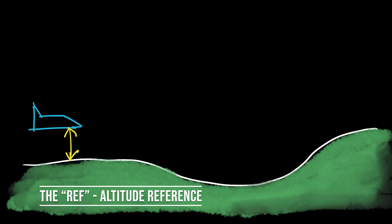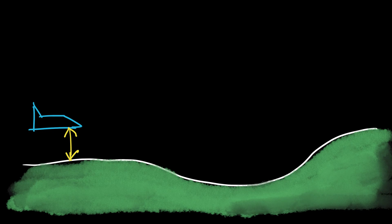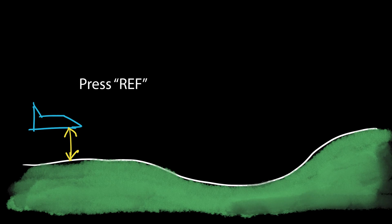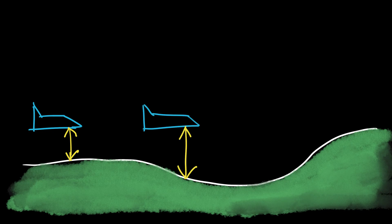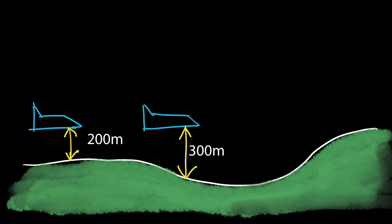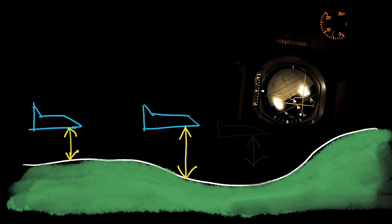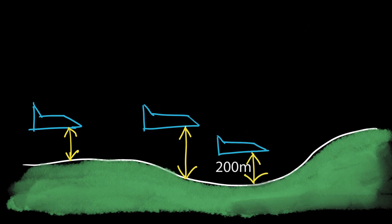Here we are in the Viggen, flying along, and we manually aim for a height that we choose — let's say 200 meters above the ground. Remember, the Viggen is in meters. Once we get to this height and we're happy, we press the ref button and it will configure the system. 200 meters is how high you want to be above the ground. A little further along, even though we've been flying completely level, because the ground beneath us has dipped away, the radar altimeter recognizes that you should be at 200 meters but it's now 300 meters. That line on the artificial horizon moves down, indicating we need to descend.